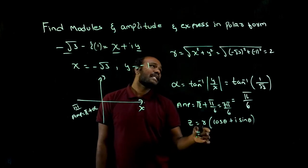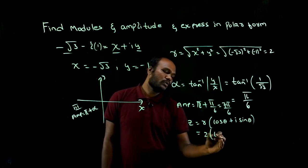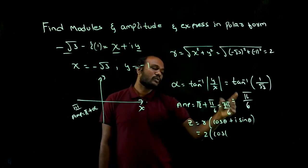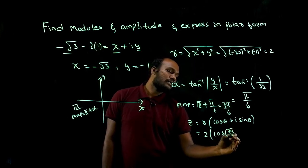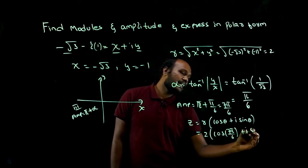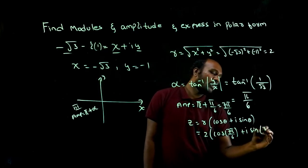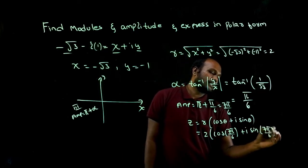If you substitute, what is the r value? 2. So 2 into cos of 7 pi upon 6 plus i sine of 7 pi upon 6.